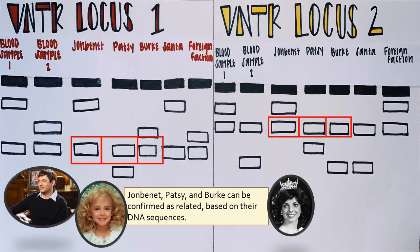Lastly, we can confirm the relatedness of JonBenet, mother Patsy, and brother Berkey by observing their DNA in both loci. When examining the VNTR loci of children and parents, the child must receive one allele from the mother and one allele from the father. If we look at the DNA of Patsy, we can see that one of her bands, or one of her alleles, is given to JonBenet. She passes the same allele on to Berkey. In this case, Patsy gives the same allele to JonBenet and Berkey in both loci. However, this is not always the case. We can assume that the other allele of both JonBenet and Berkey were given to them by their father.